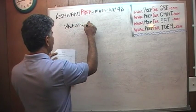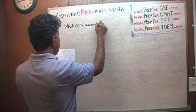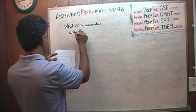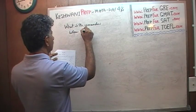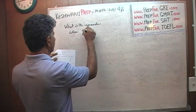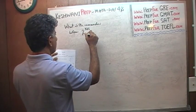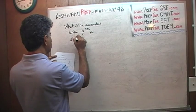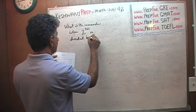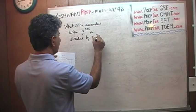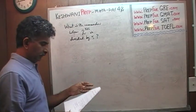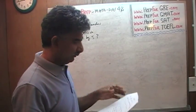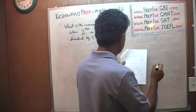What is the remainder when 2 raised to the power of 125 is divided by 5? Here are the answer choices.